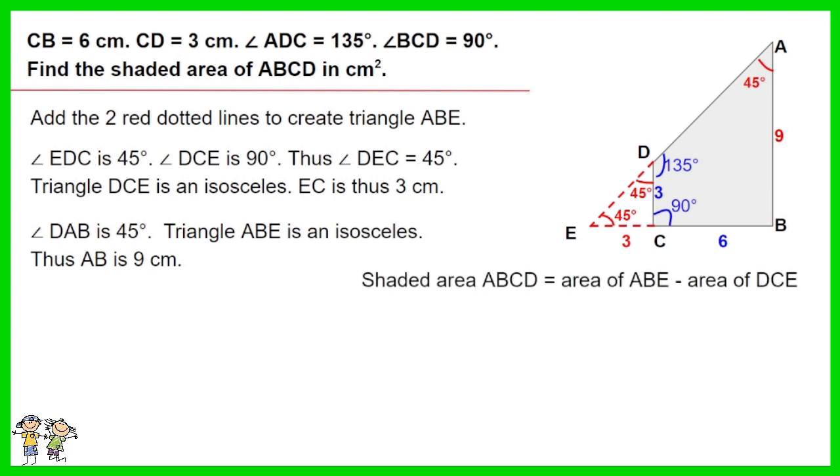The shaded area ABCD is equal to the area of ABE minus area of DCE. Work out the equation. You have 36 cm squared for your answer.